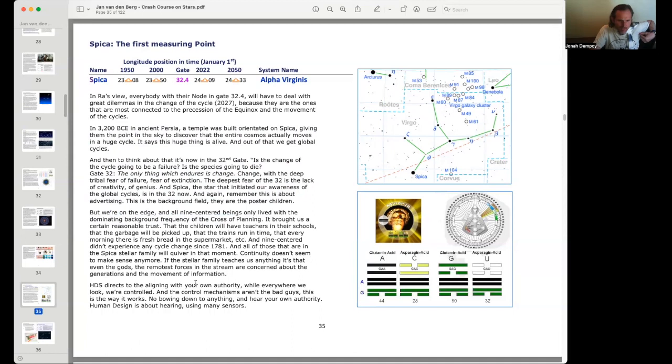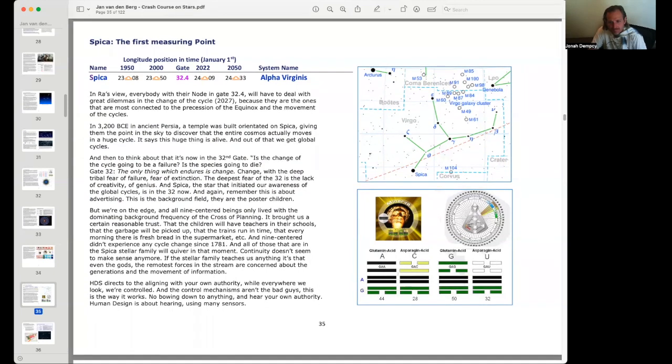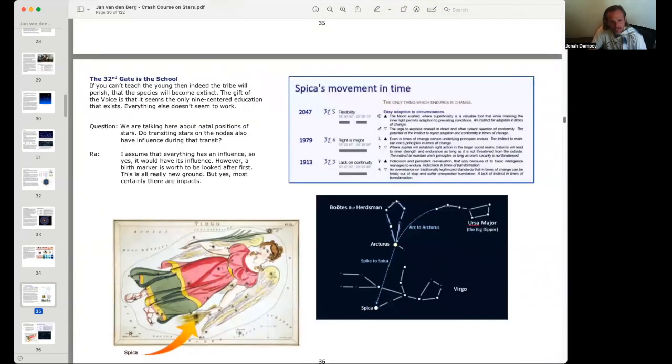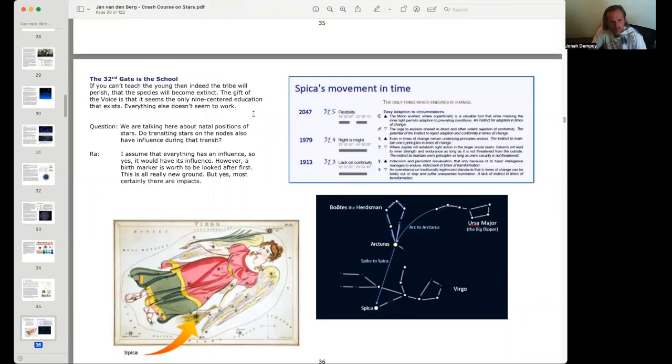The nine center didn't experience—we haven't experienced the cycle change since we emerged in 1781. All of those in the Spica stellar family will quiver in that moment. Continuity doesn't seem to make sense anymore. If the stellar family teaches us anything, it's that even the gods, the remotest forces in the stream, are concerned about the generations and the movement of information. The Human Design system directs us to align with our own authority while everywhere we look we're controlled. The control mechanisms aren't the bad guys; it's just the way it works.